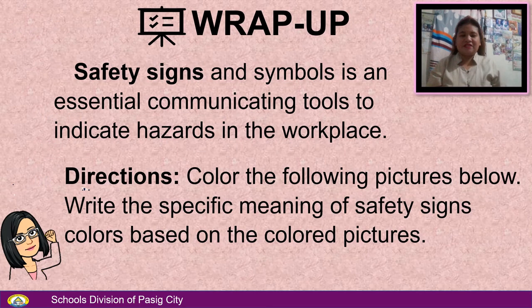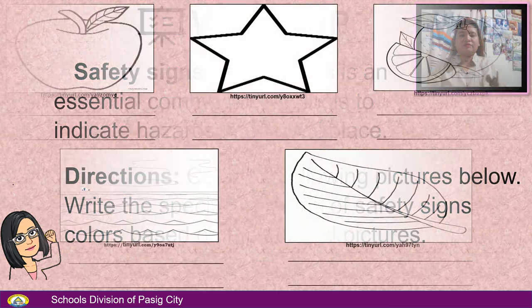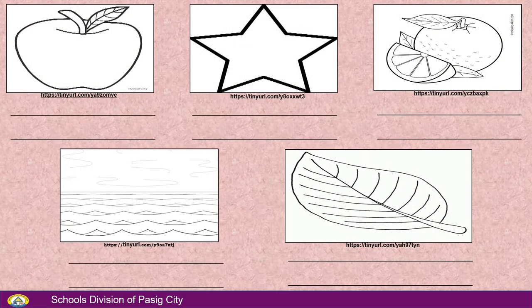Remember this: Safety signs and symbols are essential communicating tools to indicate hazards in the workplace. Directions: Color the following pictures below and write the specific meaning of safety signs and colors based on the colored pictures. First picture: Apple. Second picture: Star. Third picture: Orange. Fourth picture: Sea. Last picture: Lift.